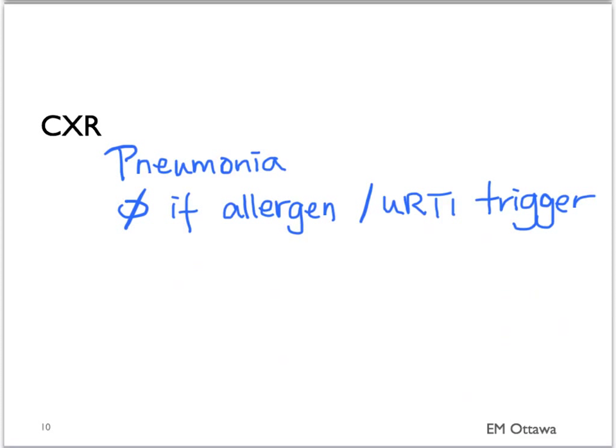A chest x-ray would be helpful in patients if we were suspecting other conditions such as pneumothorax or pneumomediastinum. Blood work has no role in the patient with a routine exacerbation. EKG can be done in patients if you are suspecting any myocardial ischemia.